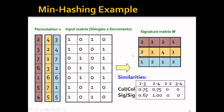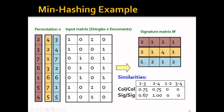For example, let's say that we are given an input matrix and we have transformed it into a signature matrix. Let's focus on column one and column three — that's document one and document three. The Jaccard similarity between document one and document three would be 0.75. But if you look at the signature of the first column and the third column, only one hash function gives the same value, so the similarity in terms of the signature is actually 0.67. So they're actually quite close to each other.